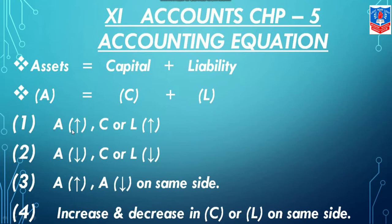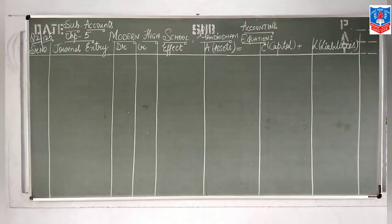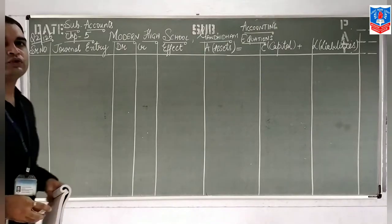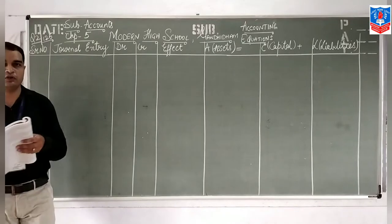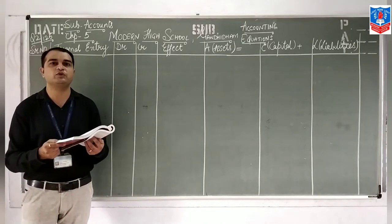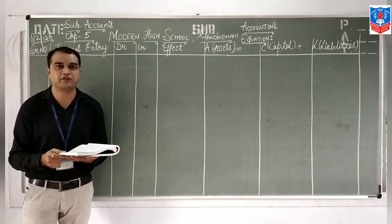Asset increase — capital liability increase. Asset decrease — vice versa of first. Capital liability decrease. And on the same side: asset increase-decrease and capital liability increase-decrease. I hope you have got it. Now, coming on to the practical question on your page number 125 as per the new textbook.